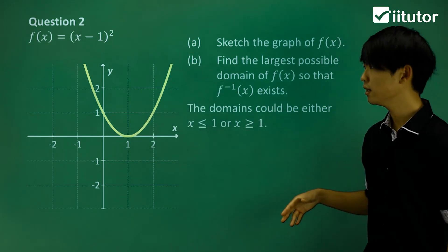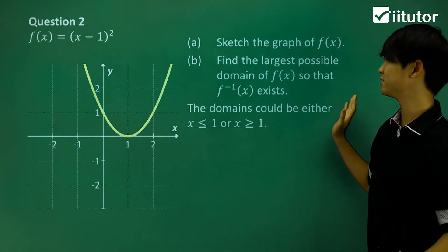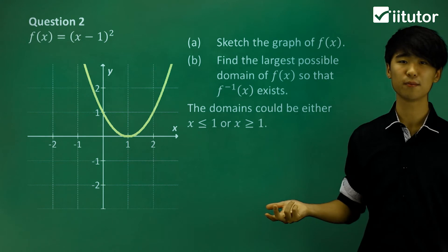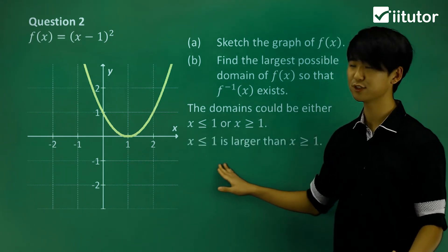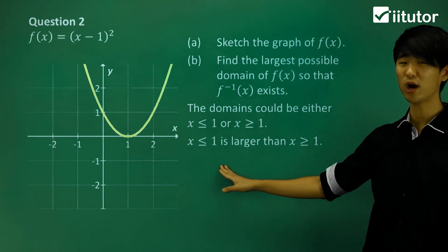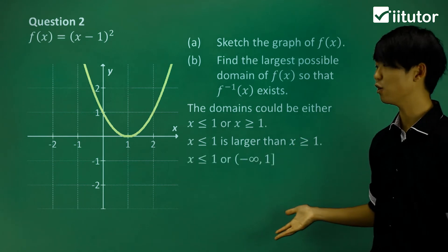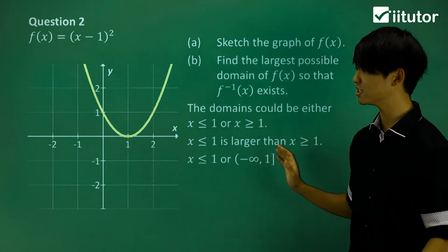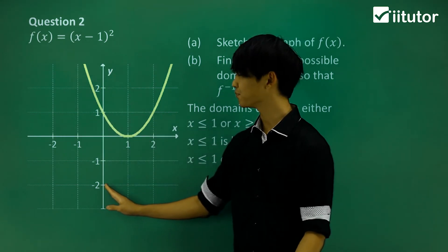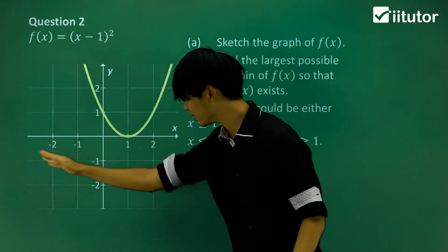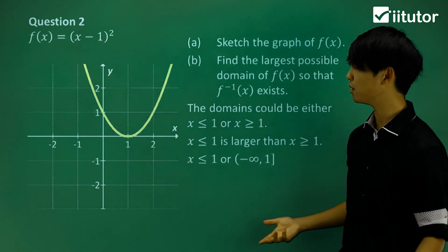There are two options, but the question asks for the largest possible domain. Between the two, x ≤ 1 is a little bigger than x ≥ 1. If we consider x = 0 as a reference, the left-side domain includes one more unit, making it slightly larger. So the answer is x ≤ 1.